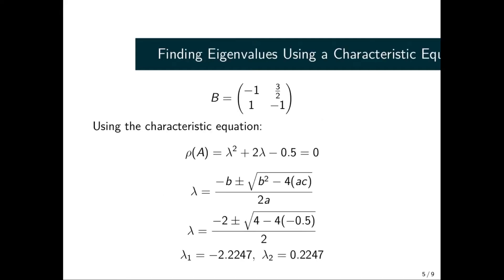Before we actually tackle the problem, we want to understand something so that we can use it to validate the solution at the end of the lesson. Considering this matrix B that we have here, we first of all obtain our characteristic equation in terms of λ squared plus 2λ minus 0.5 equals zero. Then we use the quadratic formula to help us to get the roots or the solutions of these equations.